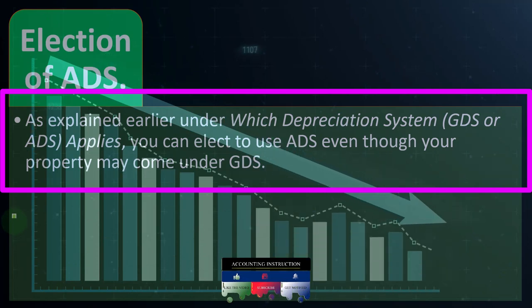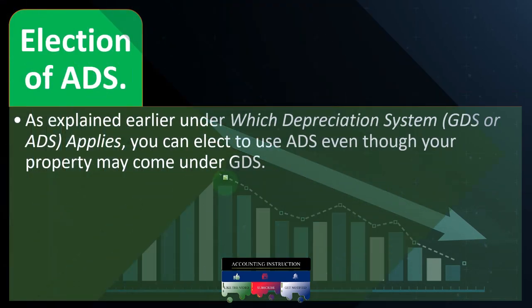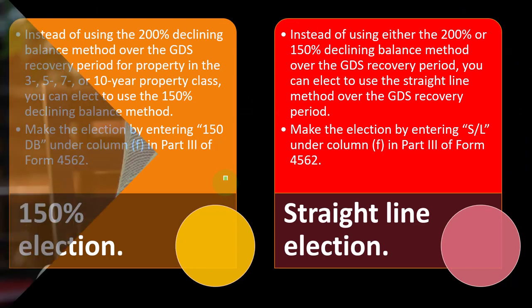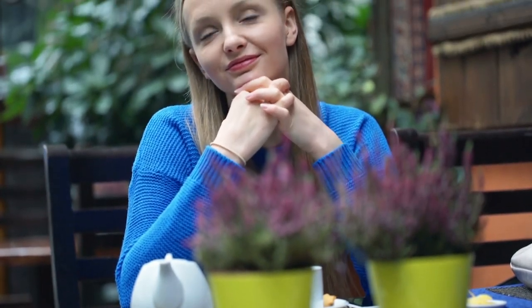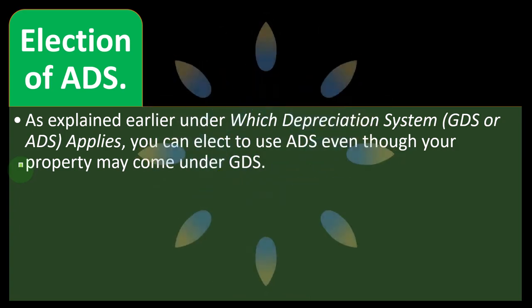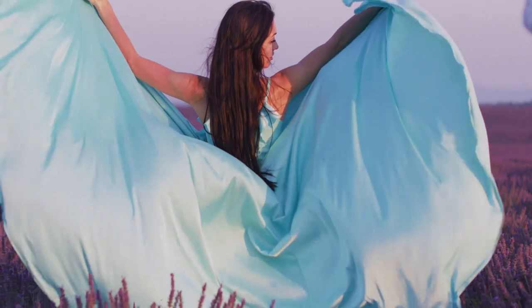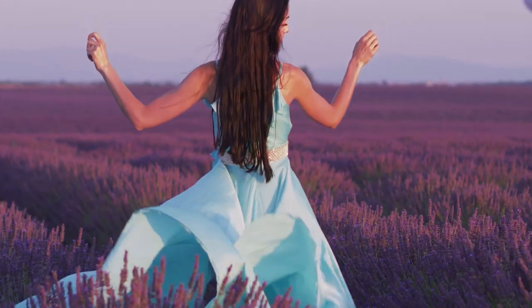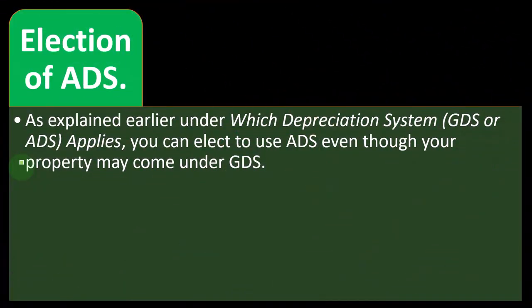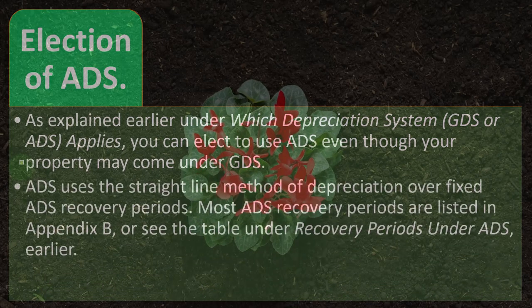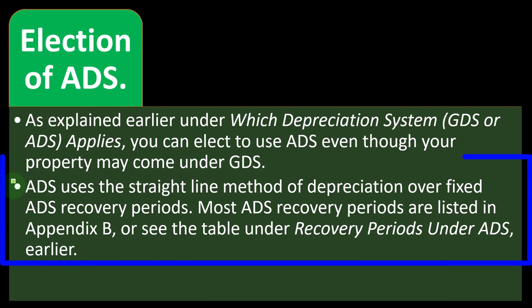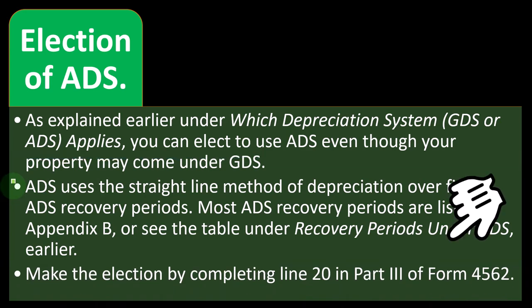Election of ADS: even though your property may fall under GDS, you can elect to use ADS. While GDS is typically preferred since you'd then choose between double declining, straight-line, or 150%, you can elect ADS if needed. ADS is generally less advantageous — it uses the straight-line method over fixed ADS recovery periods, which may have different lives or conventions. Most ADS recovery periods are listed in Appendix B. Make the election by completing line 20 in Part III of Form 4562.